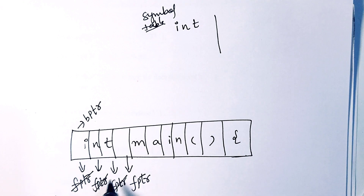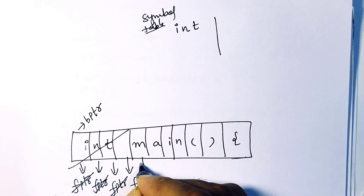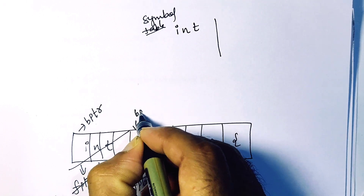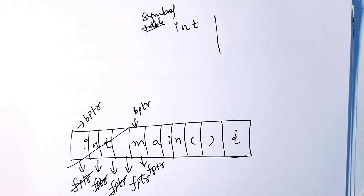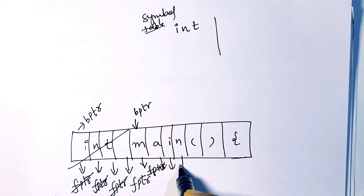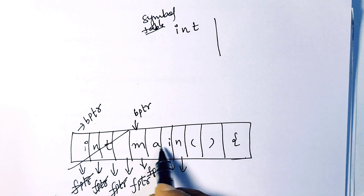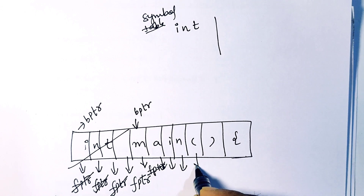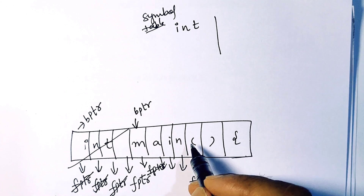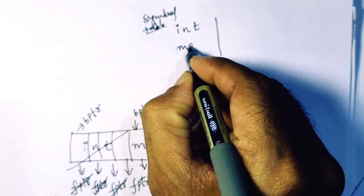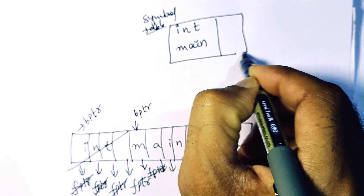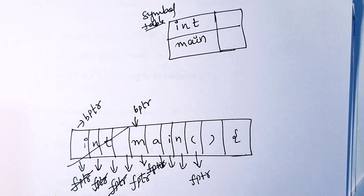After the completion of scanning 'int', fptr holds the current position and bptr comes forward. Now again the position of fptr changes — moving through m, a, i, n. When it reaches the open bracket, that is a special symbol. When it finds the special symbol, it is again going to store the token in the symbol table. This is called input buffering.